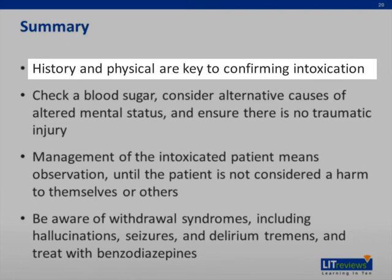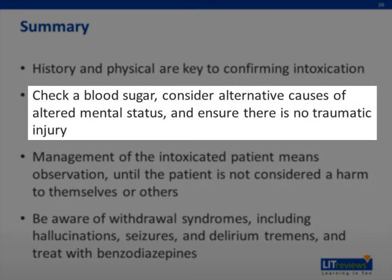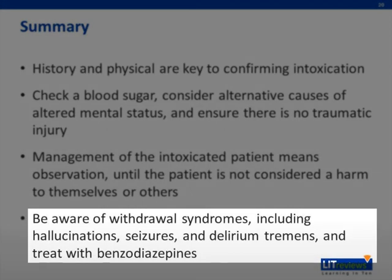In summary: the history and physical are key in confirming intoxication. It's important to check a blood sugar, consider alternative causes of altered mental status, and ensure there are no traumatic injuries. Management of the intoxicated patient means observation while being cognizant of potential withdrawal, until the patient is no longer considered a harm to themselves or to others. Always be aware of withdrawal syndromes — including hallucinations, seizures, and delirium tremens — and treat them with benzodiazepines.